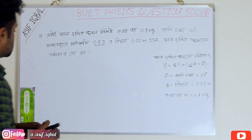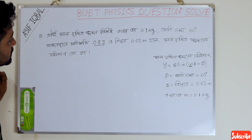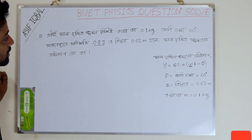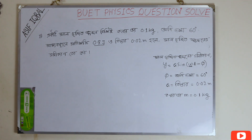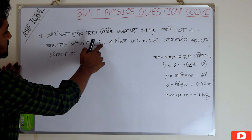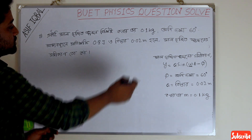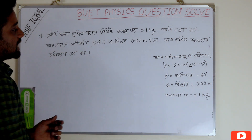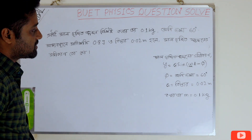This is the question which is given. We have a mass of 20 kg, angle of 60 degrees, and energy of 0.8 joules, with displacement of 0.02 meters. We know that the SHM equation is y equals A sin(ωt minus φ).